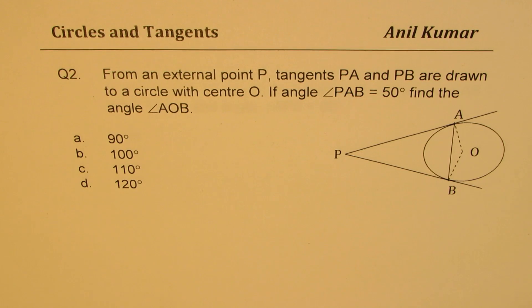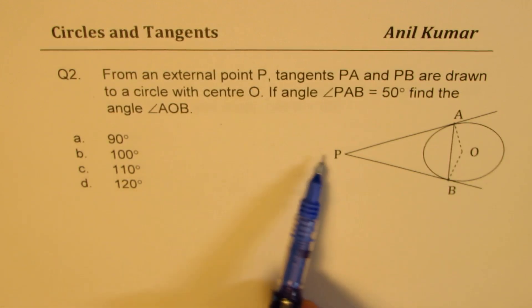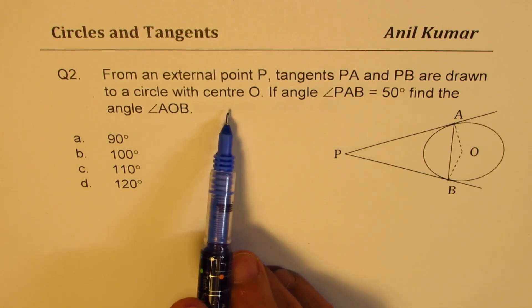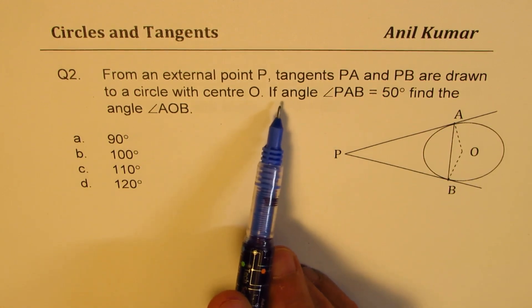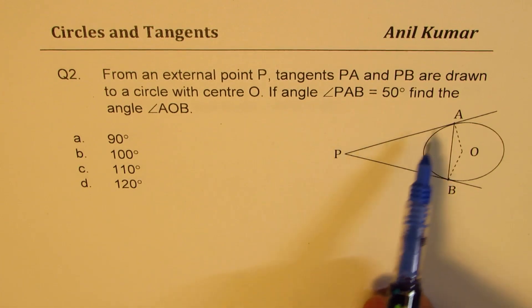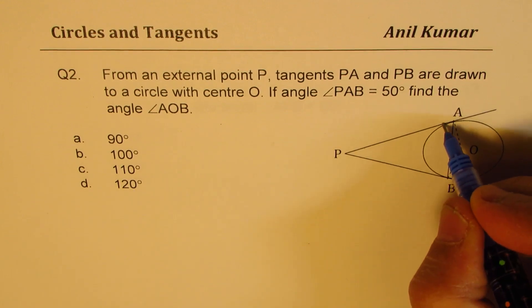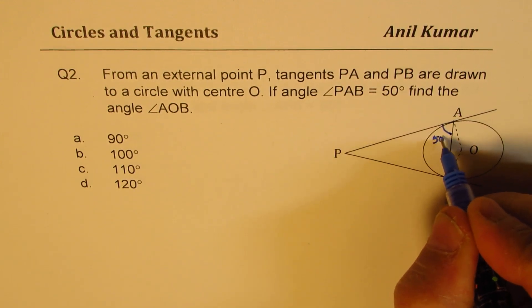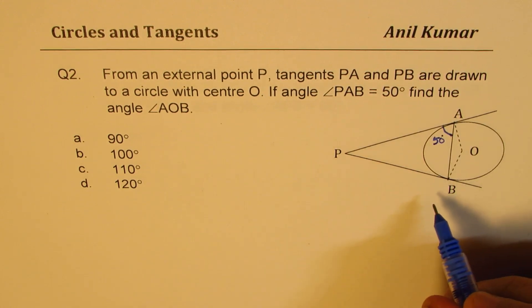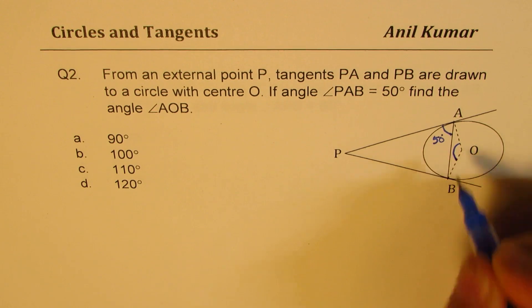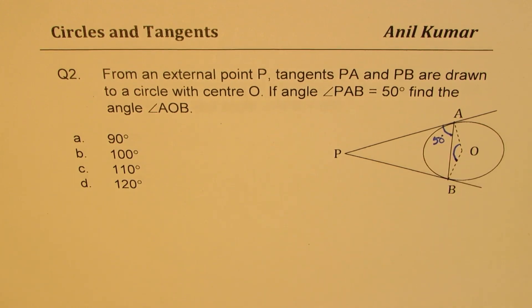Question number two. From an external point P, tangents PA and PB are drawn to the circle with center O. Now the question changes. If the angle PAB is 50 degrees, find the angle AOP. Again, four choices are given to you.